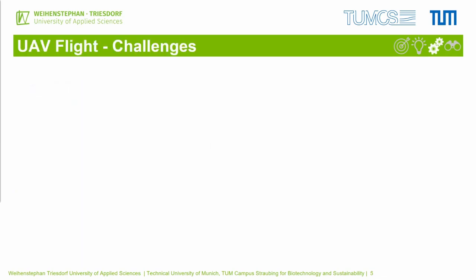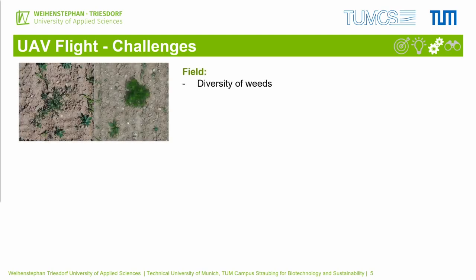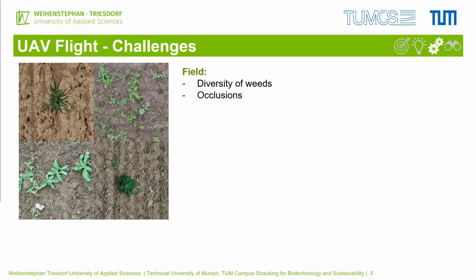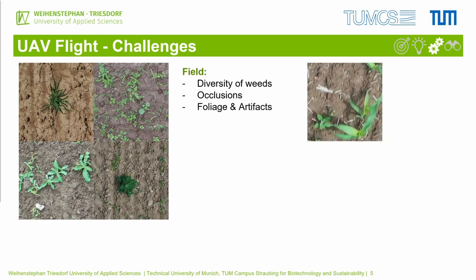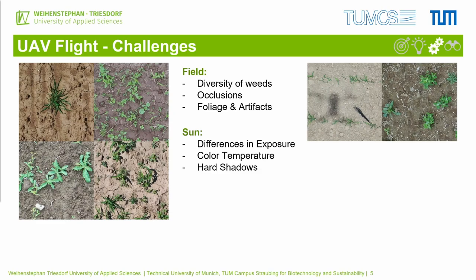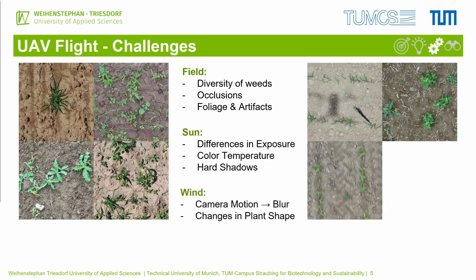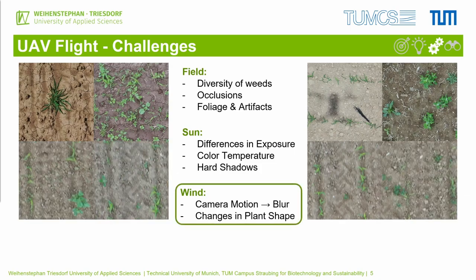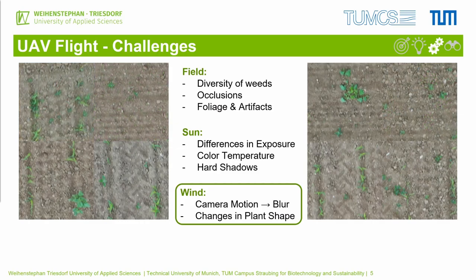Now I want to mention the main challenges in UAV flights. Here I will show some example images captured by a drone at a height of 5 meters. One main challenge is the diversity of the weeds present in the fields. Also, there are many occlusions between the plants, and there is lots of foliage and artifacts in the UAV captures. In one image we can see the shadow of the drone and bird droppings. Some other challenges arise because of abiotic factors — for example, the sun has a big impact on illumination, which leads to differences in exposure and color temperature. Also, hard shadows are visible in these captures. Another factor is the wind, which has a huge effect especially on consumer-grade UAVs, leading to motion blur and changes in the plant's shape. We focused on UAV images with motion blur in our first experiments, as this is one major difficulty and a realistic scenario in future applications.